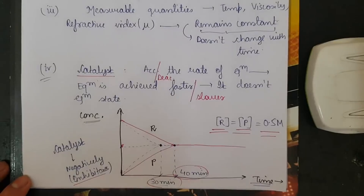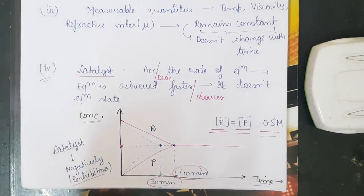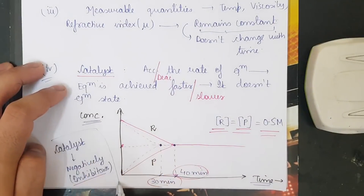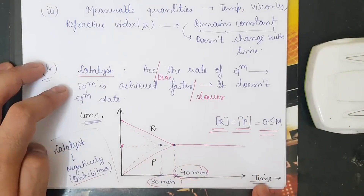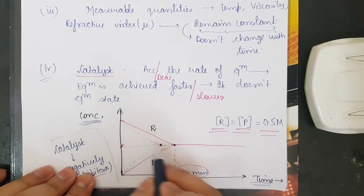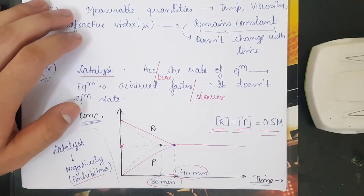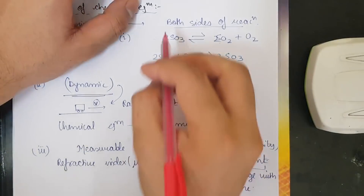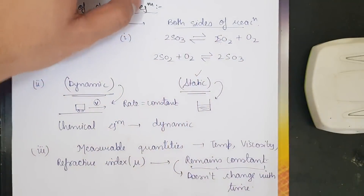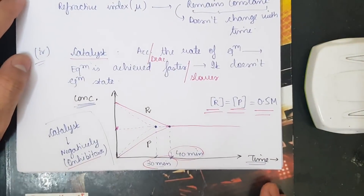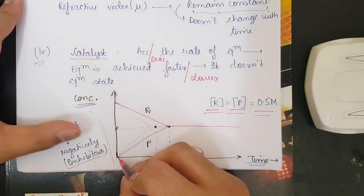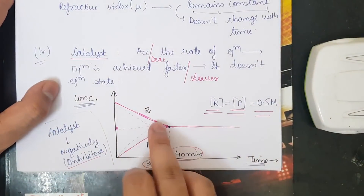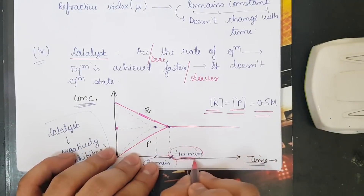To understand this, consider a graph with concentration on the Y-axis and time on the X-axis. The blue line represents the reactant and the red line the product. Without a catalyst, the reactant decreases while the product increases, and equilibrium is achieved at t = 40 minutes — shown with the red pen graph.